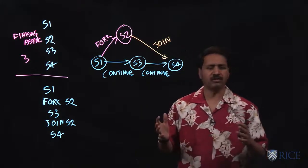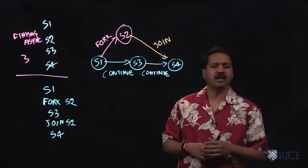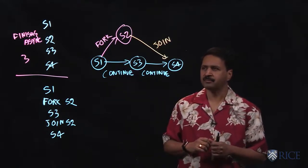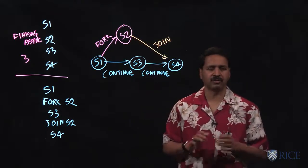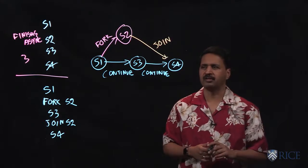Now here's the interesting property of the graph. If you want to reason about which statements can execute in parallel, we ask, is there a path of directed edges from one statement to another? So for example, there's a path from s2 and s4, so that tells us s2 and s4 cannot run in parallel with each other.